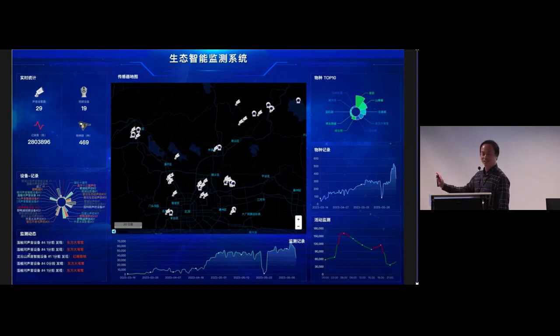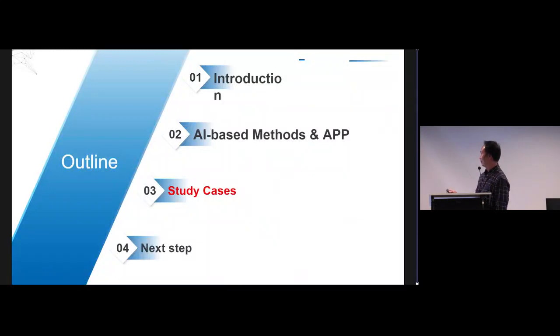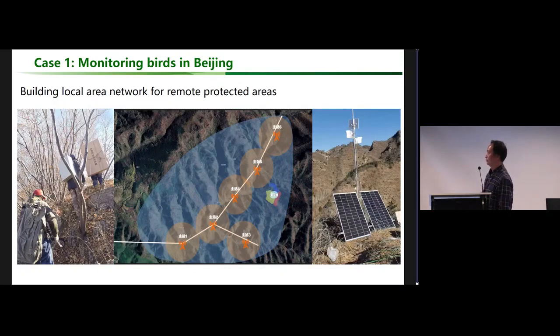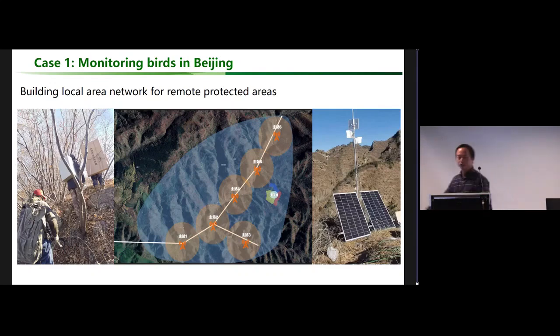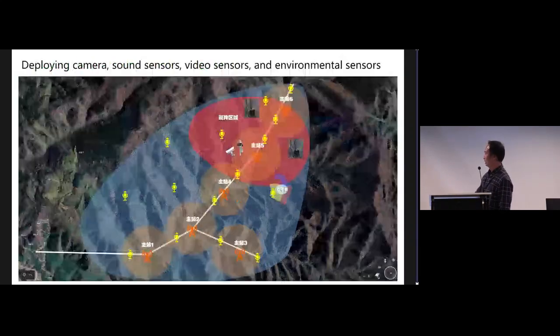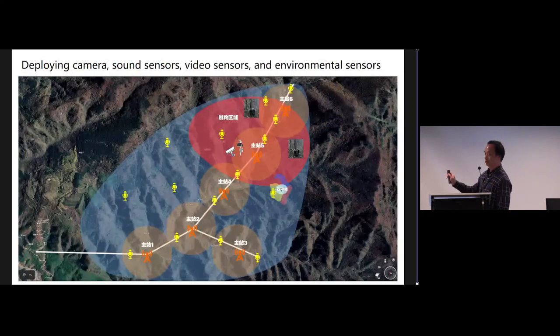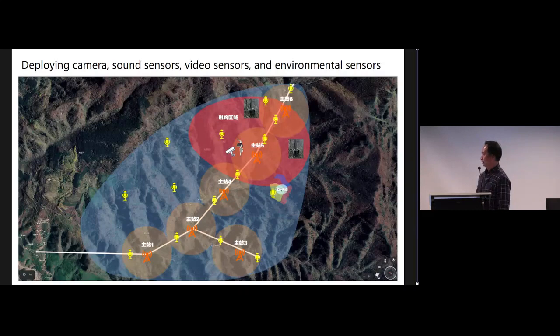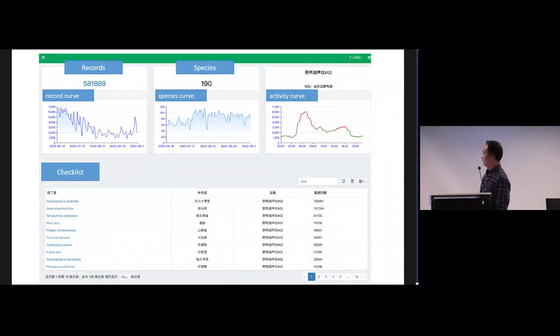I want to show some cases where we applied our detection system. This one is for monitoring birds in Beijing. We have built a local area network for a remote protected area. It's a hard job - we have to carry the materials by climbing the mountains. The middle image shows where the signal stations we have established, and this is the real signal station. We deployed cameras, sound sensors, radio sensors, and environmental sensors in the range covered by the signals.